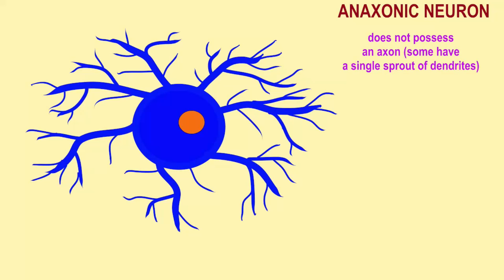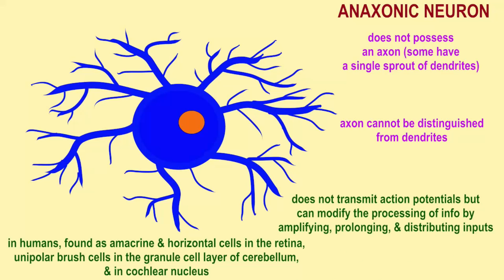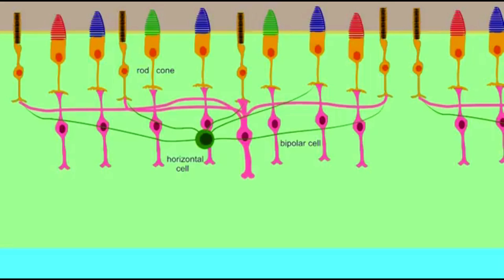For example, there are anaxonic neurons. They are not that common. Some do not possess an axon, but rather a single sprout of dendrites, while others have multiple processes and an axon cannot be distinguished from dendrites.